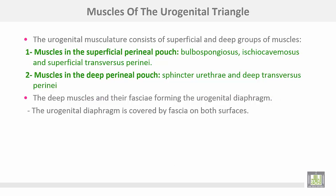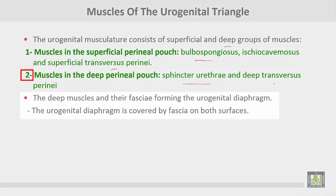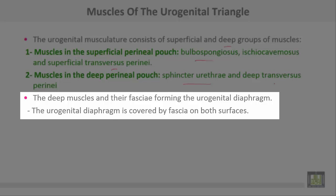The muscles of the urogenital triangle consist of superficial and deep groups. Muscles in the superficial perineal pouch include bulbospongiosus, ischiocavernosus, and transversus perinei muscles. Muscles in the deep perineal pouch include the sphincter urethrae and deep transversus perinei. The deep muscles and their fasciae form the urogenital diaphragm, which is covered by fascia on both sides.